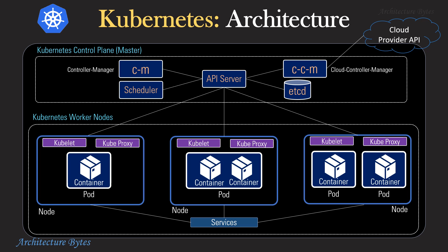The API server exposes APIs to manage the Kubernetes cluster. On nodes, you have kubelet and kubeproxy, which interact with the API server to manage the pods on nodes. In addition, there are Kubernetes services that provide access to pods over a network.